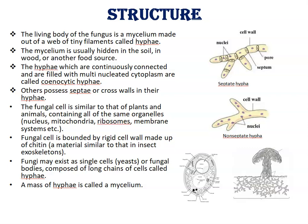Fungal cells are otherwise similar to that of plants and animals, containing all the organelles like nucleus, mitochondria, ribosomes, endoplasmic reticulum, etc. The fungal cell is bounded by a rigid cell wall made up of a material called chitin.